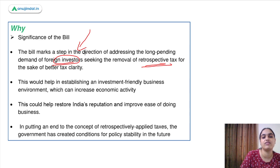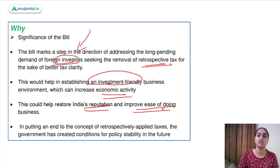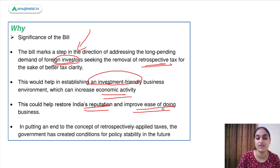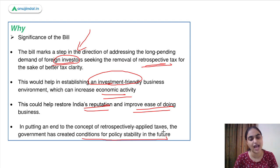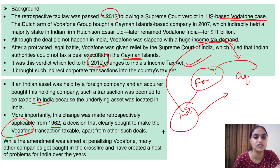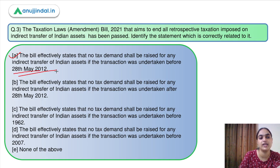Removing the retrospective tax will attract foreign investors, create an investment-friendly business environment, generate more economic activity, improve India's reputation, and improve India's ease of doing business. It will also help create conditions for political stability and improve relationships with other countries when making decisions for foreign investors. Coming back to the question, the correct statement is option A: that indirect transfers will not be taxed if they happened before 28th May 2012.